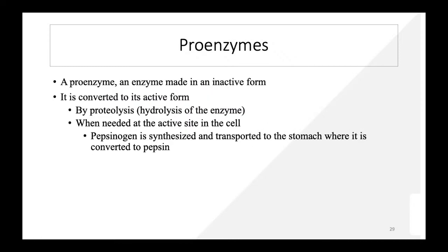Proenzymes are enzymes made in inactive form. They are converted to their active form by proteolysis when needed at the active site in the cell. For example, pepsinogen is synthesized and transported to the stomach, where it is converted to the active enzyme pepsin.